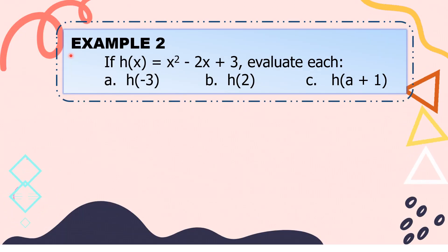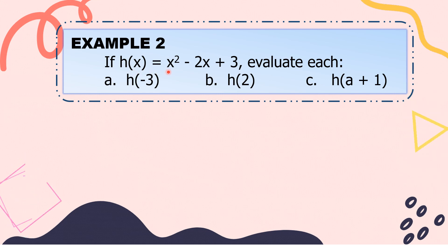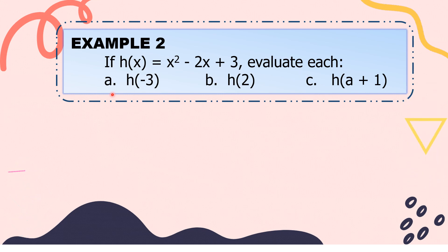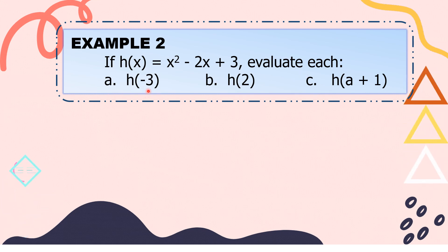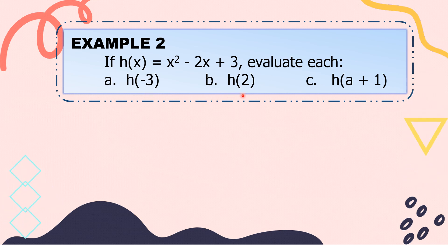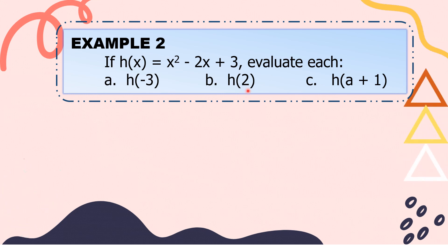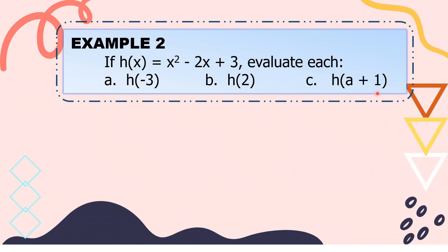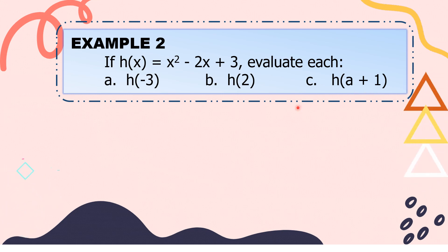Let's have example number 2. If h of x equals x squared minus 2x plus 3, evaluate each. A: h of negative 3, where the value of x is negative 3. Letter B: h of positive 2, where the value of x is positive 2. C: h of a plus 1, where the value of x is a plus 1.